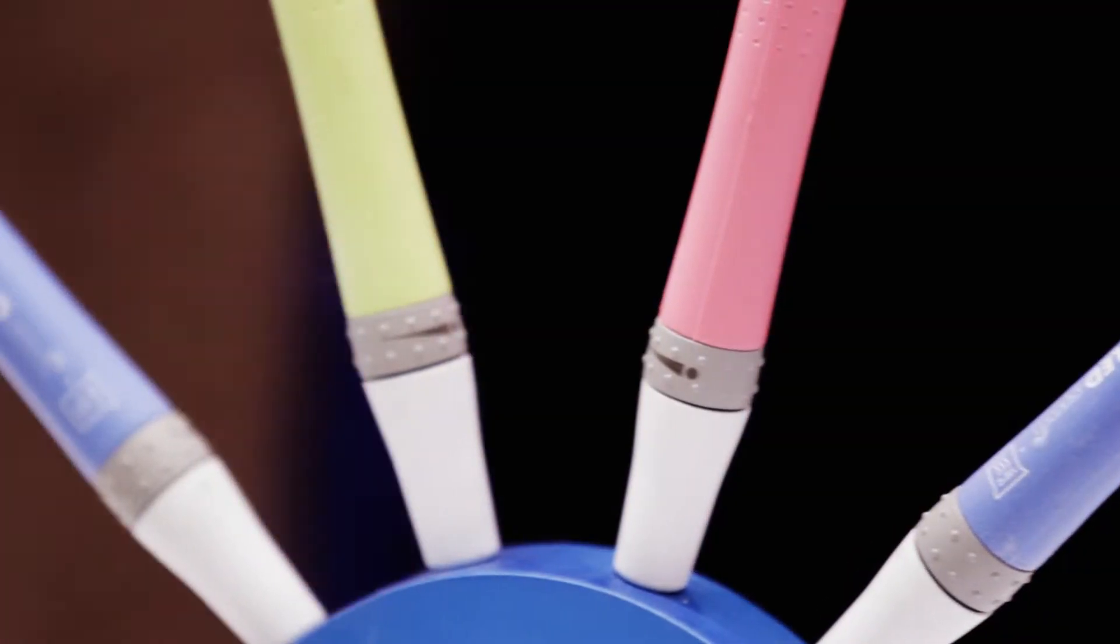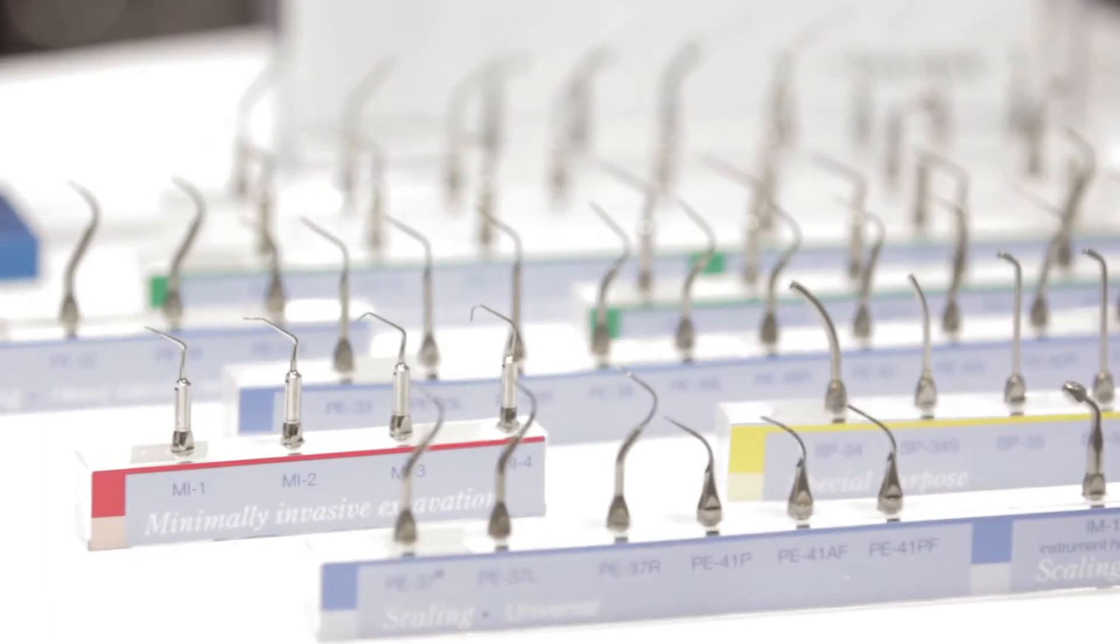The sleeves come off and you put those in the autoclave, and you can swap out the tips if you need to. There are over 60 different tips on the scaler side.